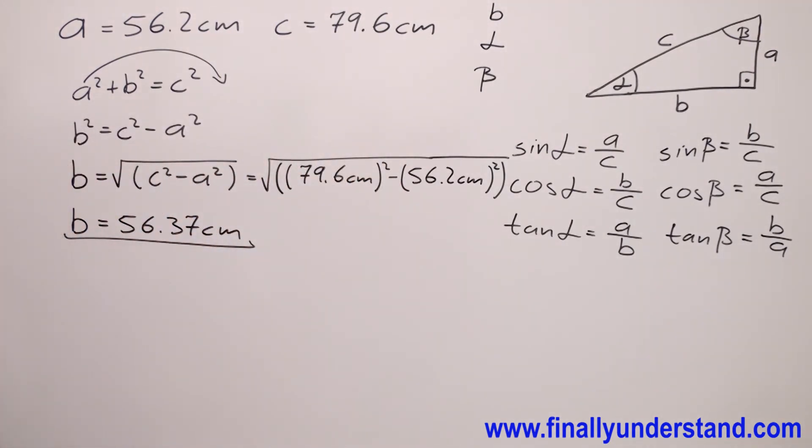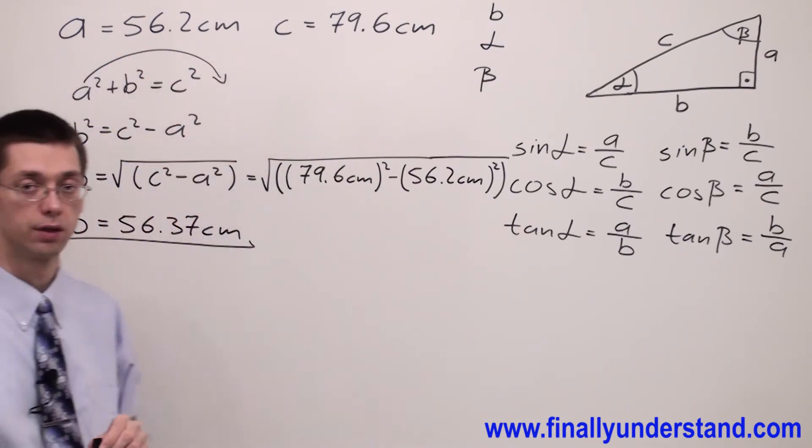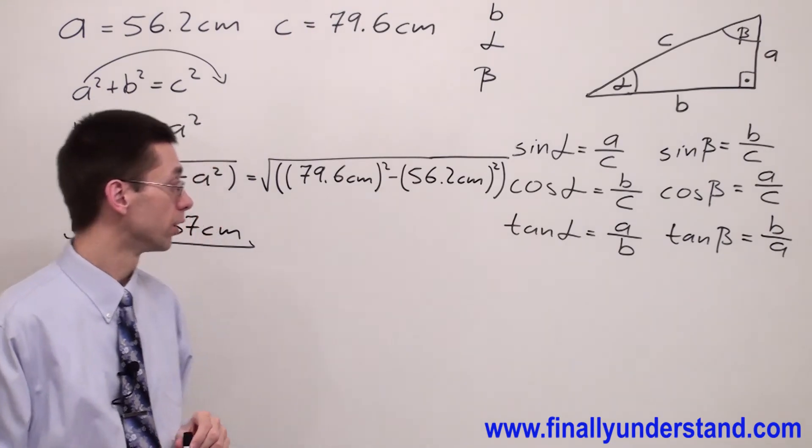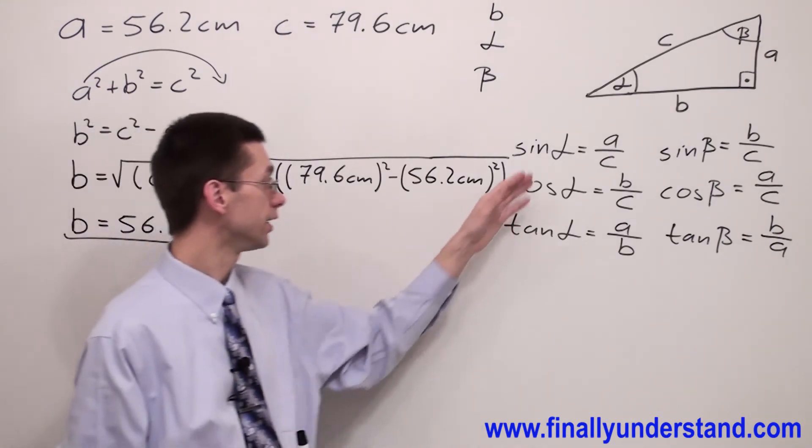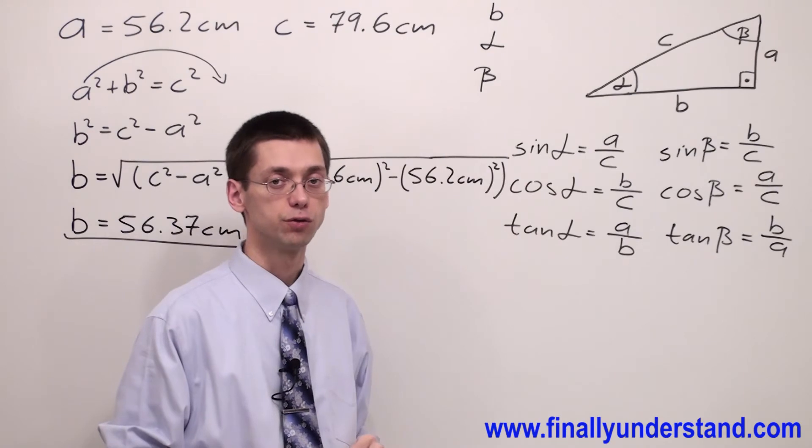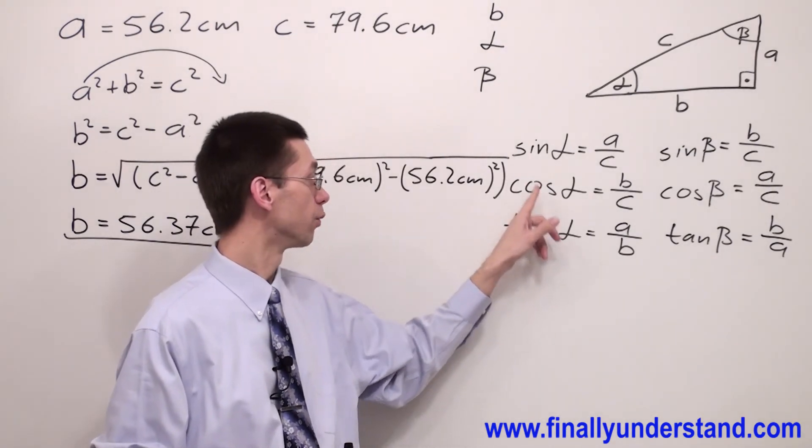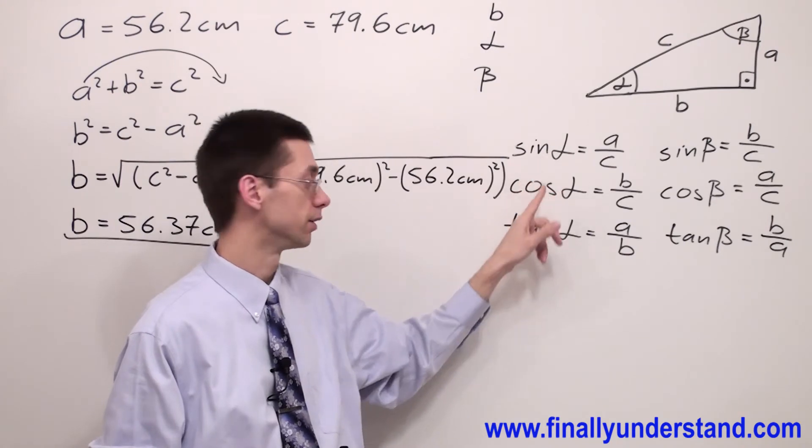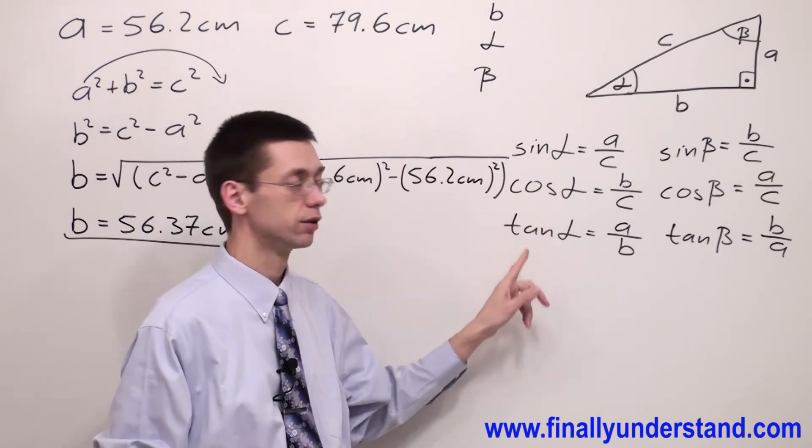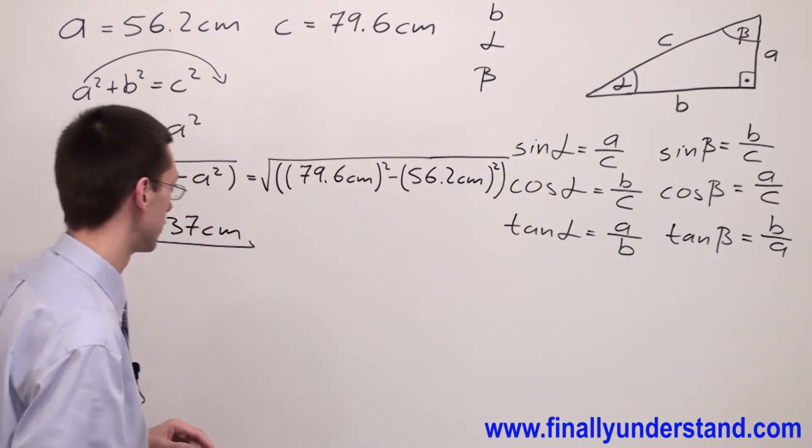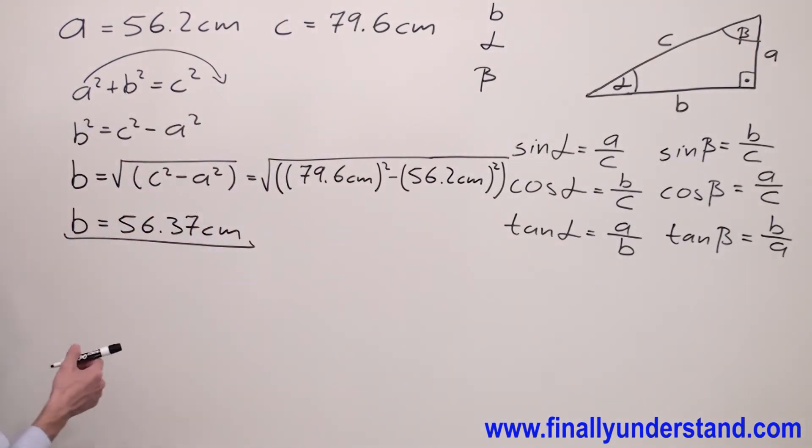Next, because we have the length of three sides already on the board, we can use any trigonometric function. Tangent to find angle alpha. Before we used sine alpha, this time we are going to use tangent alpha just to show you that we can use either one.